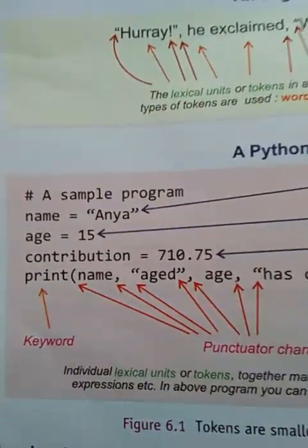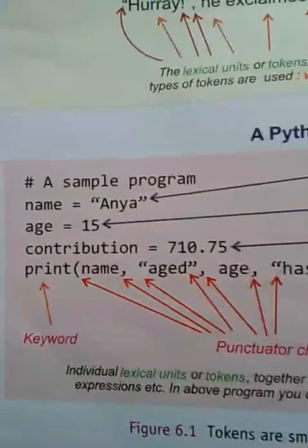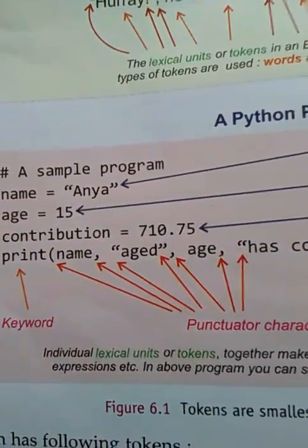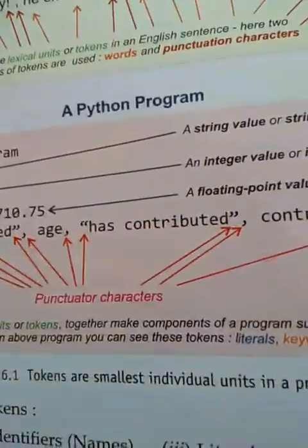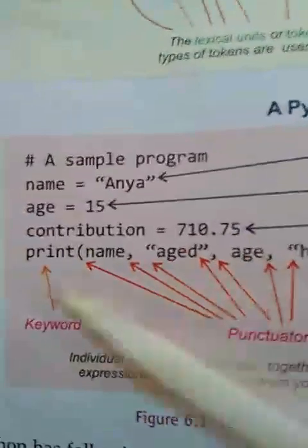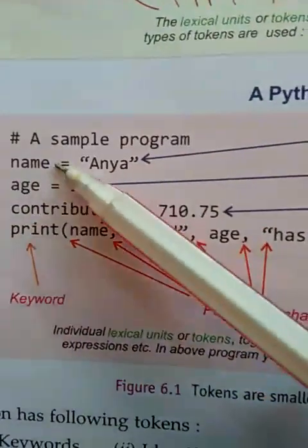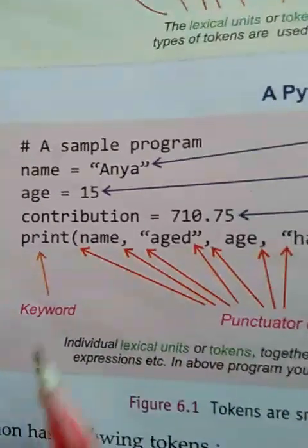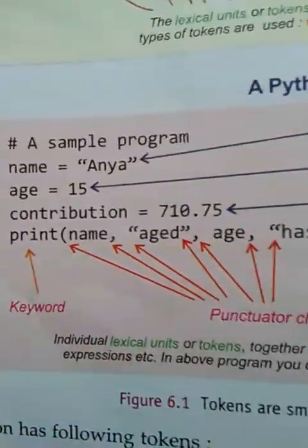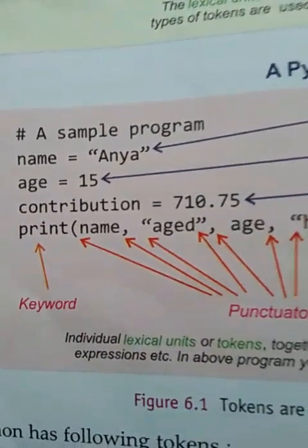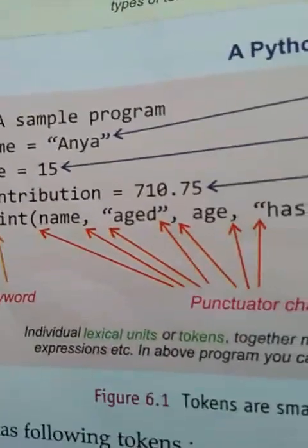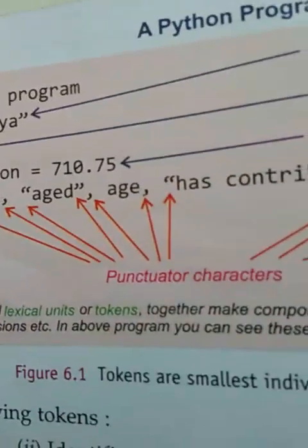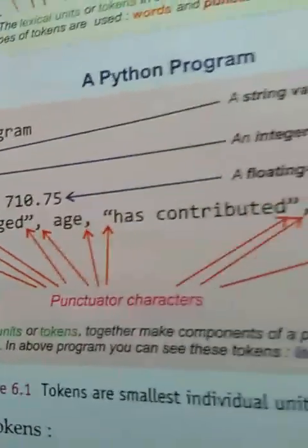You can understand this with the help of a program. Here, 'name' and 'age' are variables, and the values 'Ania' and 15 are called literals, while a variable is called an identifier. 'Print' is a reserved word used for printing, so it is called a keyword. Brackets, commas, and inverted commas are all called punctuators or separators.